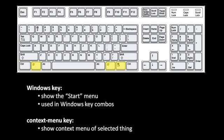One more key you'll see two of at the bottom of your keyboard is the Windows key, usually labeled with the Microsoft Windows icon. If you hit this key, it's the same as clicking on the Start Menu button. The Windows key is also used in a number of shortcuts for Windows itself — for example, if you hold the Windows key and hit M, that will minimize all of your windows. The key to the right of the Windows key is called the Context Menu key, and when you hit it, it will pop up a context menu of whatever you have selected.